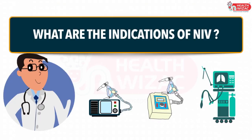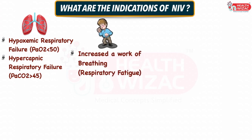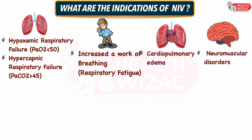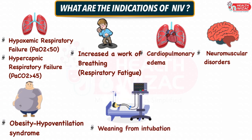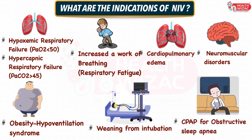What are the indications of NIV? NIV is indicated in clinical conditions like hypoxemic and hypercapnic respiratory failure — i.e. type 1 and type 2 respiratory failure — increased work of breathing or respiratory fatigue, cardiopulmonary edema, neuromuscular disorders, obesity hypoventilation syndrome, patient requiring weaning from intubation or tracheostomy, and lastly CPAP for obstructive sleep apnea.